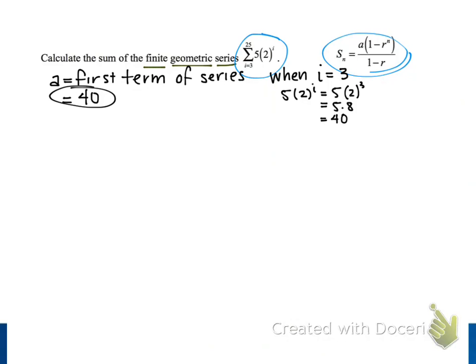Next, the variable r represents the common ratio of our series. Suppose we take one term of our series, a sub i equals 5 times 2 to the i-th power, and we divide it by the previous term, a sub i minus 1 equals 5 times 2 to the i minus 1 power. The 5's are going to cancel.